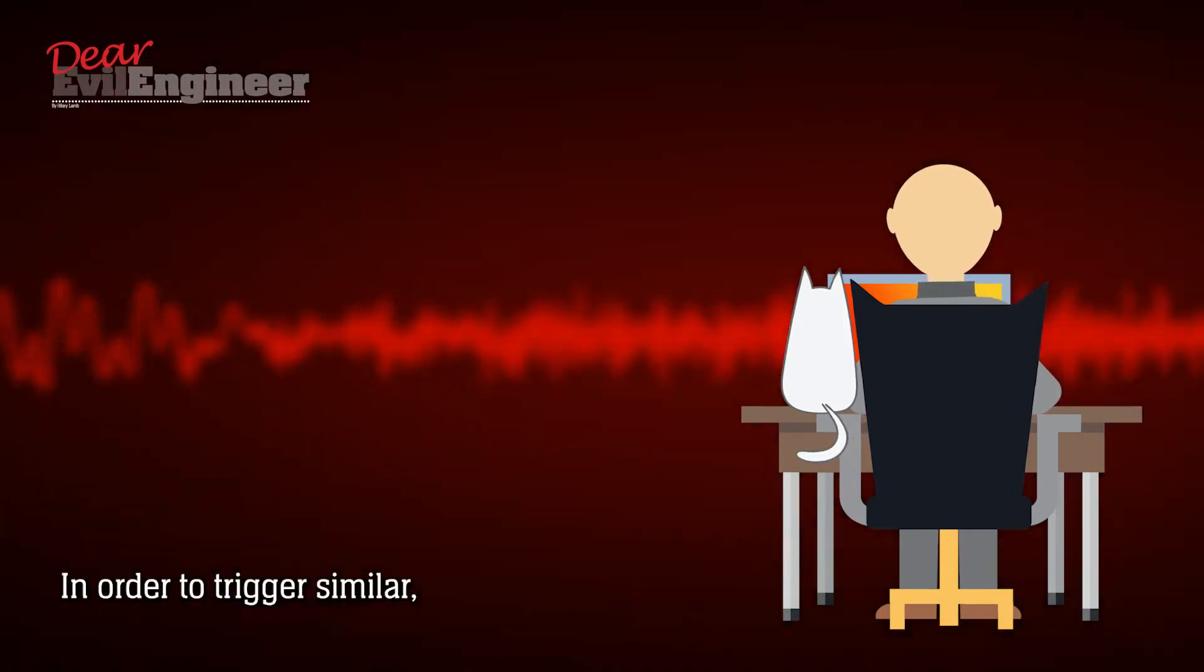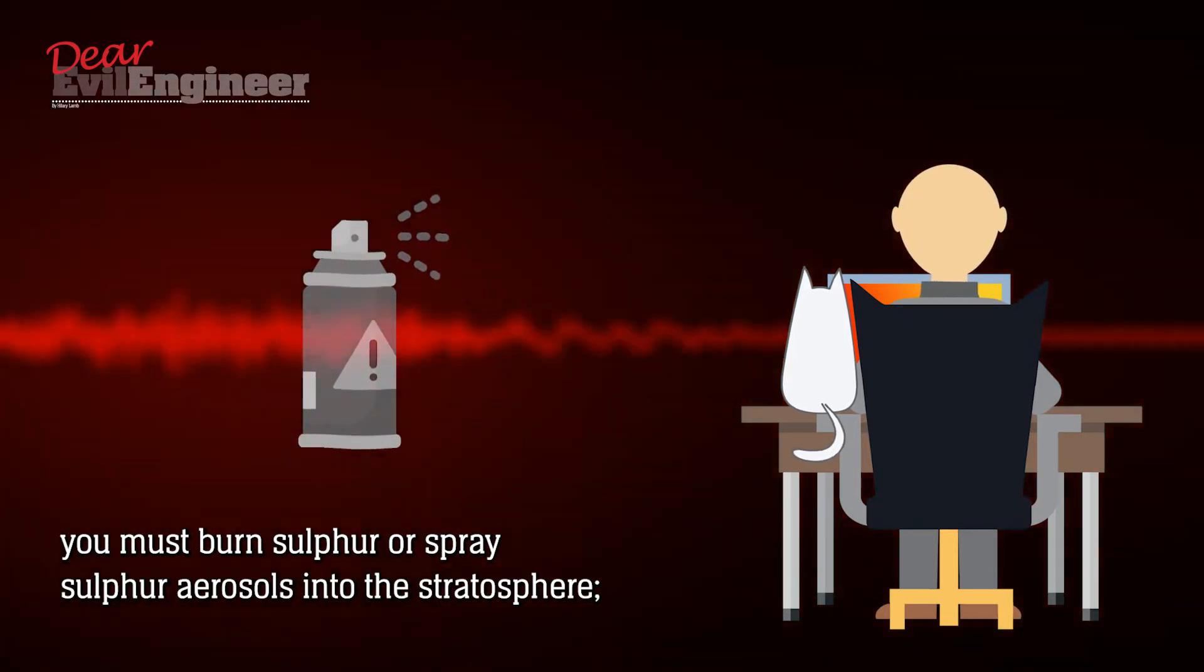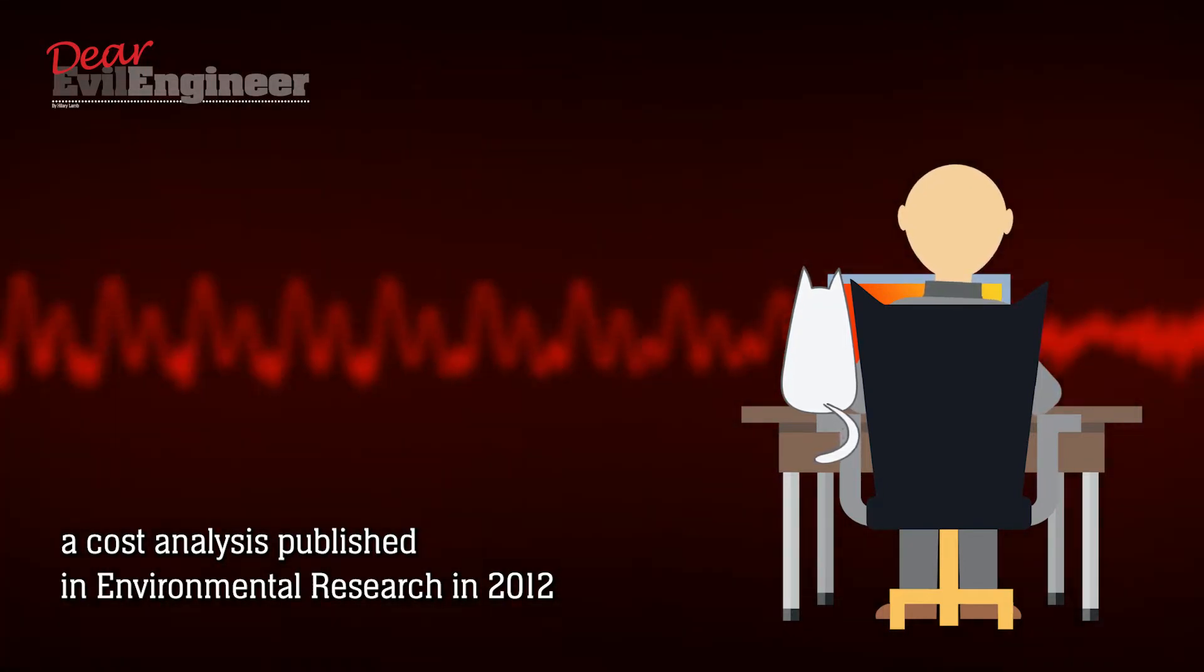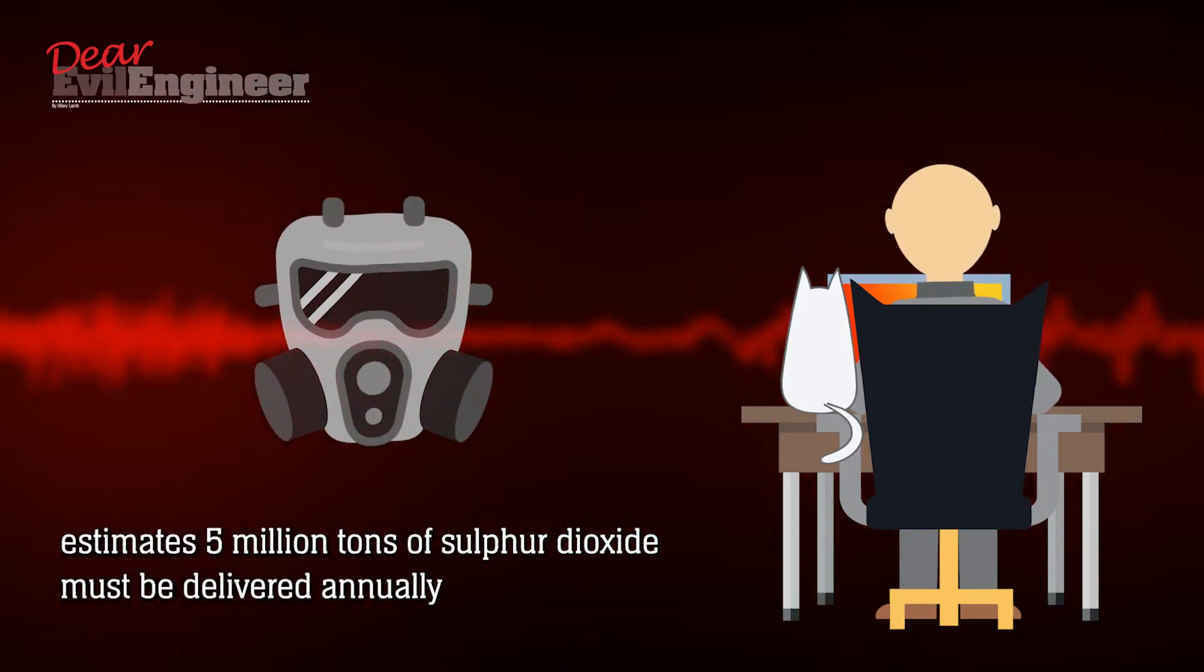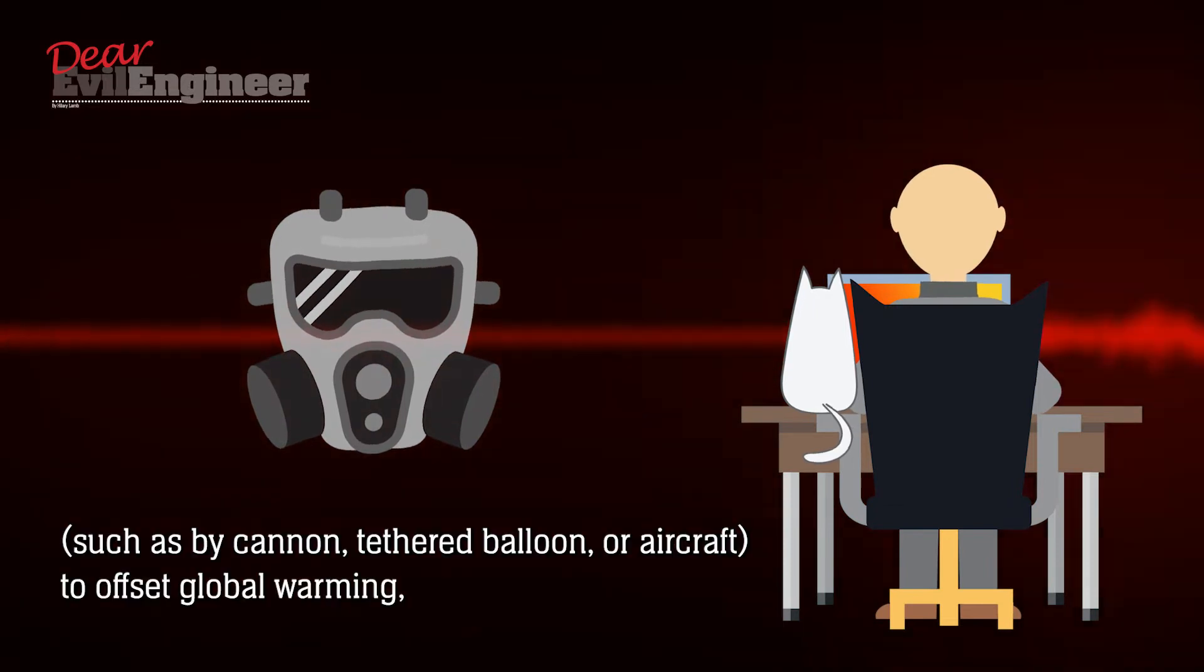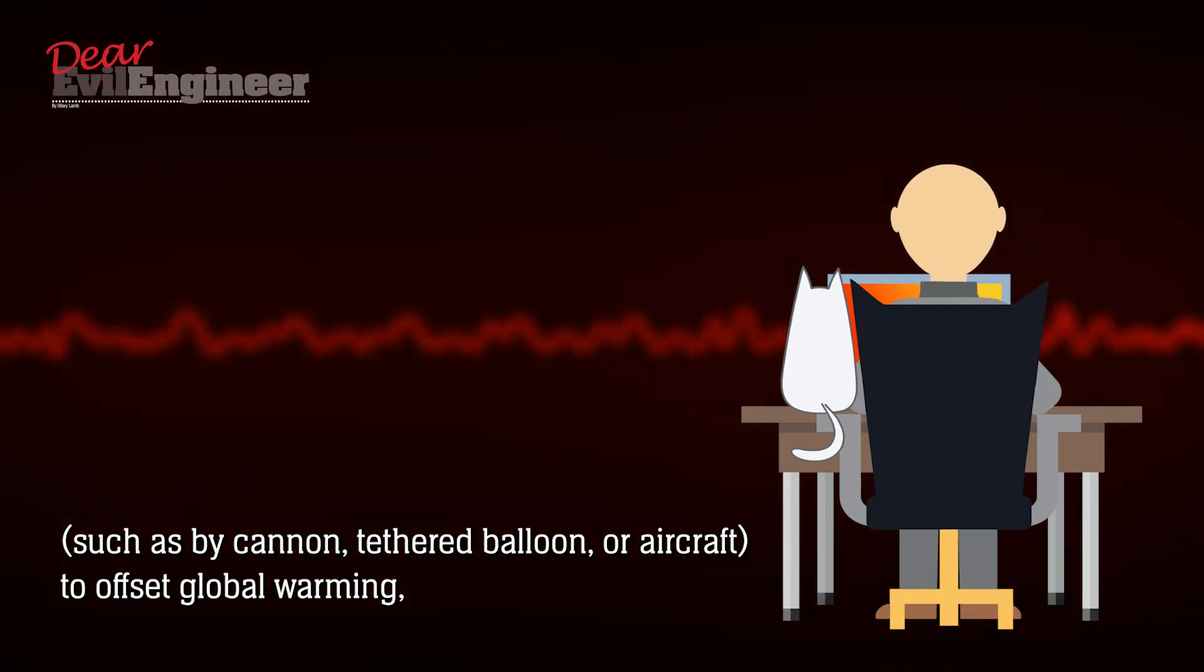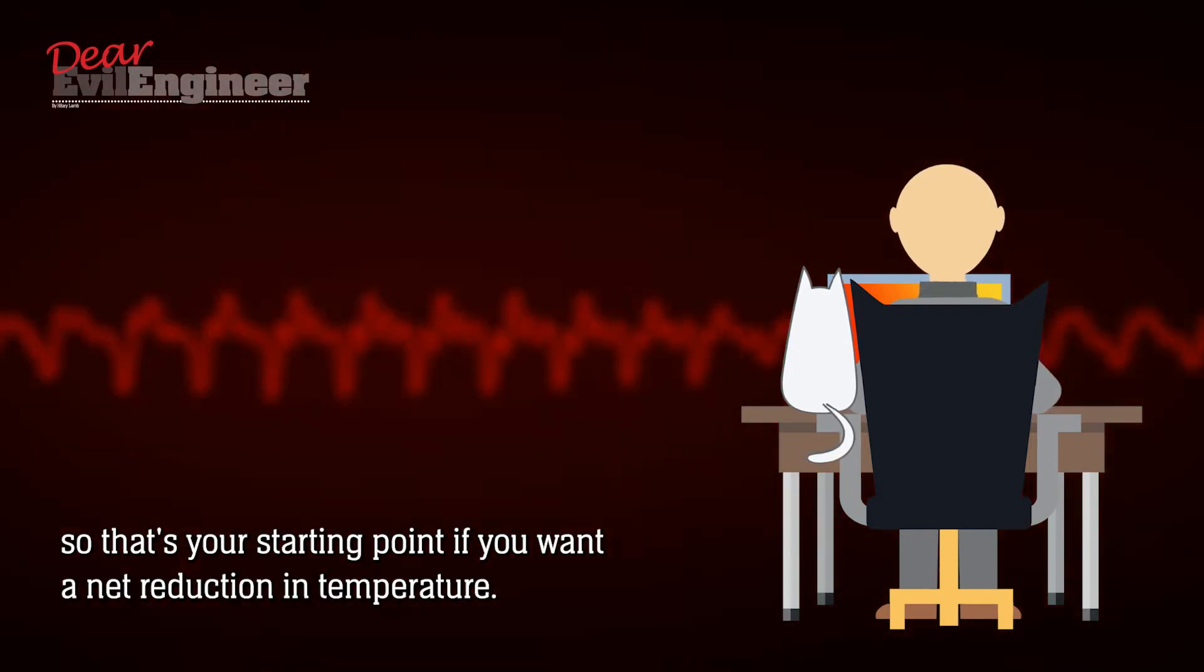In order to trigger similar, you must burn sulfur or spray sulfur aerosols into the stratosphere. A cost analysis published in Environmental Research in 2012 estimates 5 million tonnes of sulfur dioxide must be delivered annually, such as by cannon, tethered balloon or aircraft, to offset global warming. So that's your starting point if you want a net reduction in temperature.